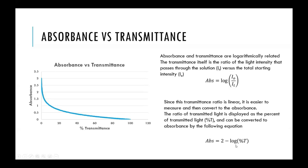It's easier to measure the percent transmittance because usually a detector in an instrument is detecting how much light is coming in, and that is linearly related. It can then be converted through the log to absorbance.